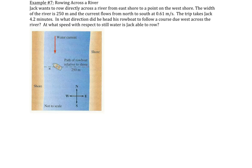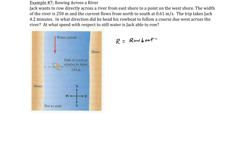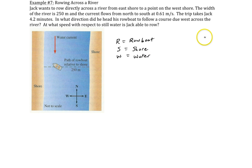Let's start writing down some of our givens. It would be good to establish, before we do the sketch, what subscripts we're going to be using. We have a rowboat, so we'll use capital R for the rowboat. We have the shore, so I'll use S — that's basically the ground. And then we have the water, so I'll use capital W for water. We have a speed of 0.61 meters per second, and this is moving in the direct south direction.